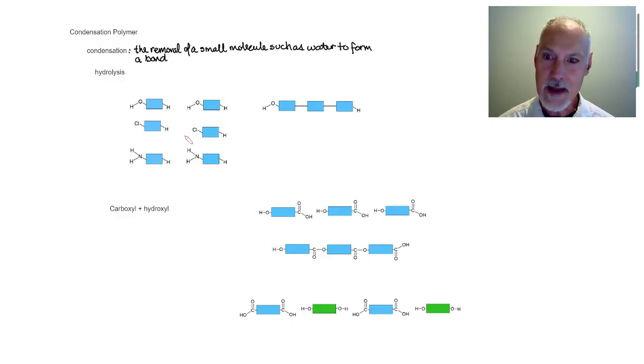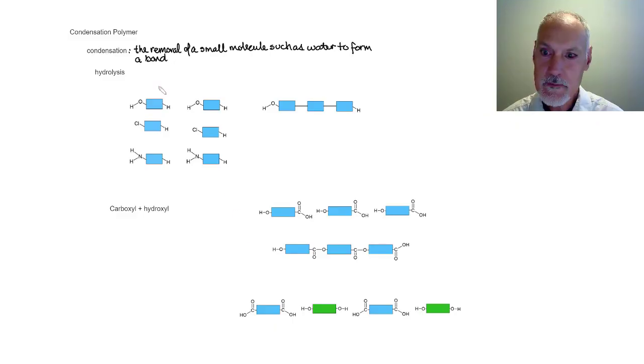Let's take a look at how that happens. Here I have an example of my starting material, my monomers as we called them in the previous program. And I've got two of them here. If I remove that combination from those molecules, I'll produce a water molecule. And the two can then join together to create the polymer that you see over here.